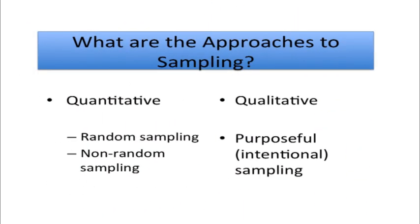We also need to recognize that sampling is different between quantitative and qualitative approaches. In quantitative research, what we try to do is randomly sample participants — we select participants that might be representative of some larger population. Sometimes we have to use non-random sampling and take what might be called a convenience sample, where we just work with all the students in a particular class. In qualitative research, there's a different type of sampling called purposeful sampling or intentional sampling. The whole idea is not to draw a sample representative of a population, but to draw a sample that can best help us understand the research problem we're looking at.